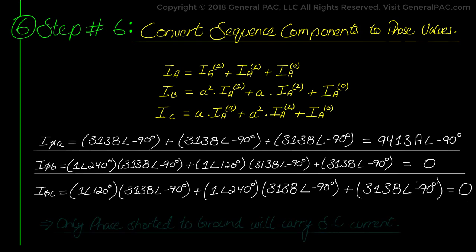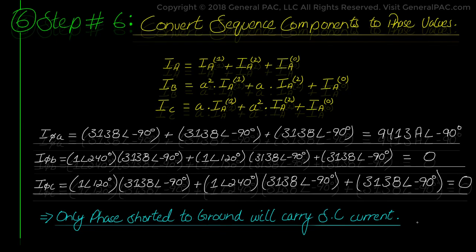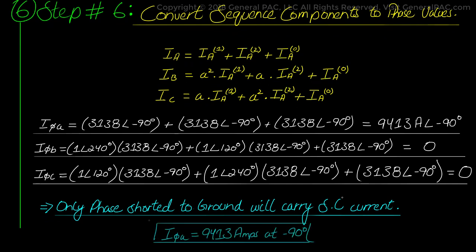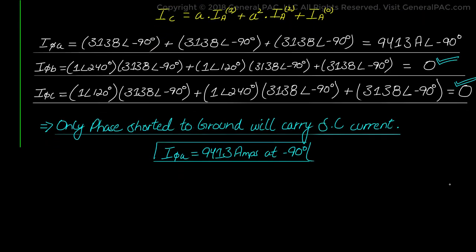Intuitively, only the phase shorted to ground is supposed to carry the short circuit current. In this case, the faulted phase is phase A, which has 9413 amps at -90 degrees. The remaining phases — phase B and phase C — have no fault current flowing, therefore they are 0.